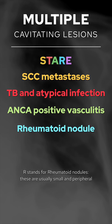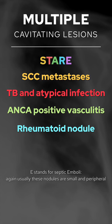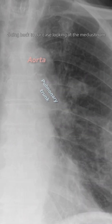R stands for rheumatoid nodules. These are usually small and peripheral. E stands for septic emboli. Again, usually these nodules are small and peripheral.